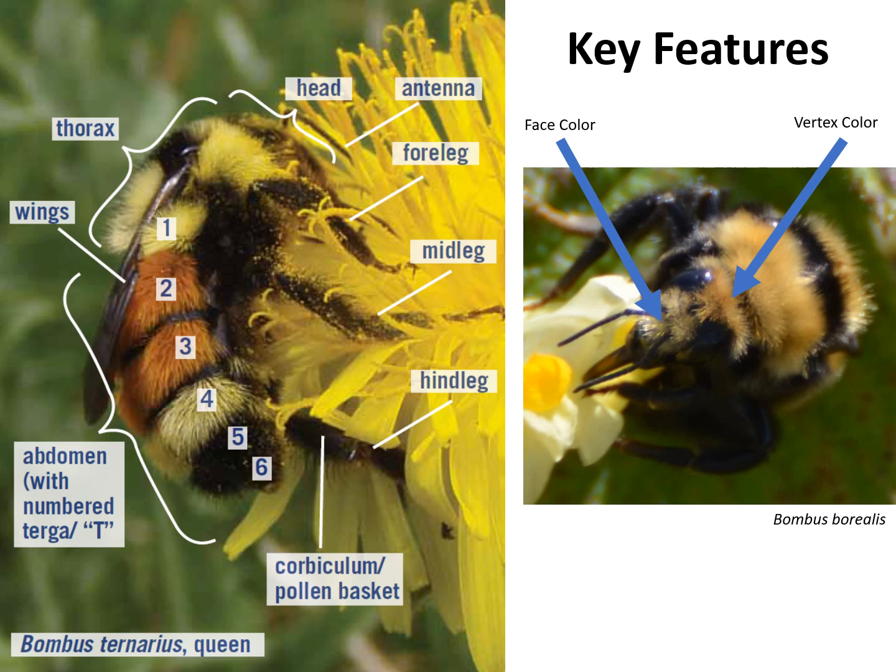Males and females have a different number of abdominal segments. Females have six and the last one is pointed; males have seven and the last segment is rounded. The Bumblebee Brigade field guide, available on the project website, shows the vertex and face colors, thorax pattern, abdominal coloring, and other key traits for the state's most common morphs. The vertex and face color are small and easy to overlook on the field guide, so be sure to look closely.